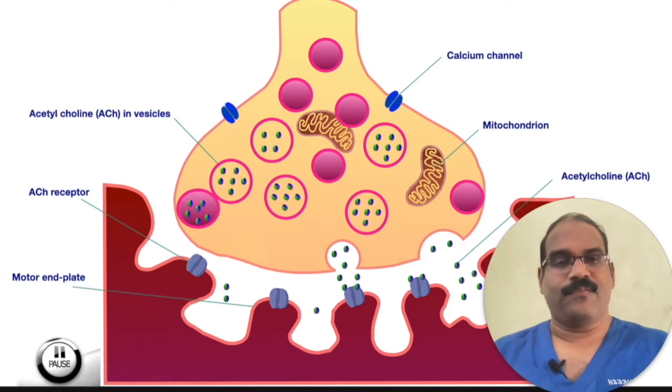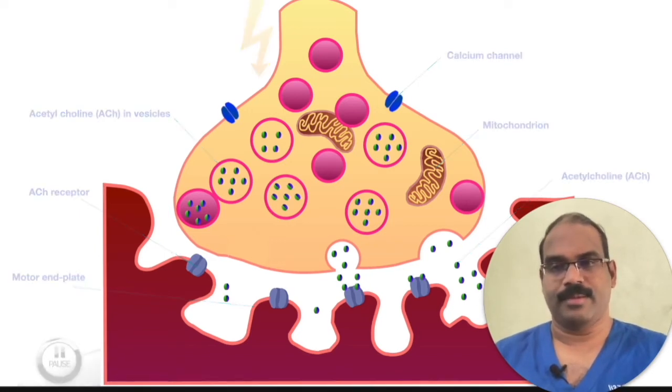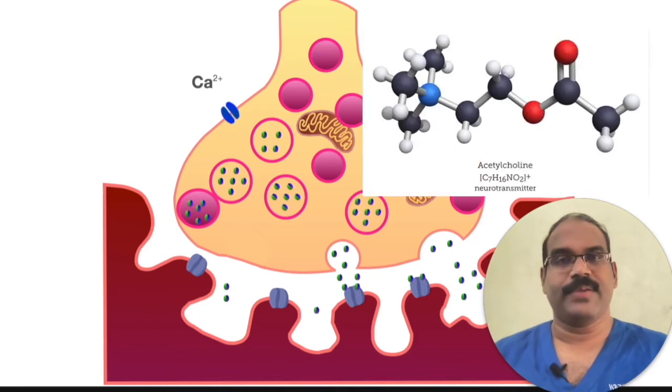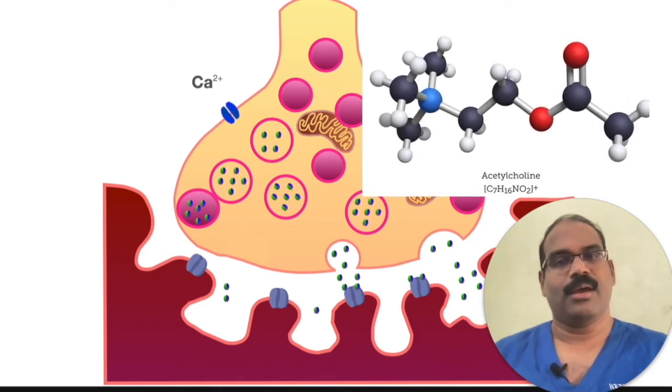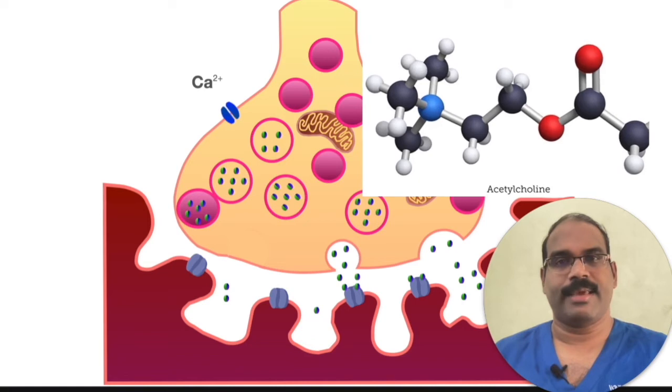Now you can find an impulse or action potential reaching the nerve terminal. Now you can find the presynaptic calcium channel opening, allowing calcium influx into the nerve terminal. This is the signal to proceed with exocytosis of vesicles containing acetylcholine.